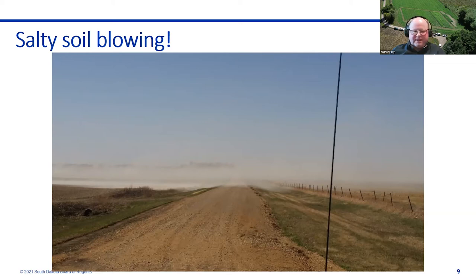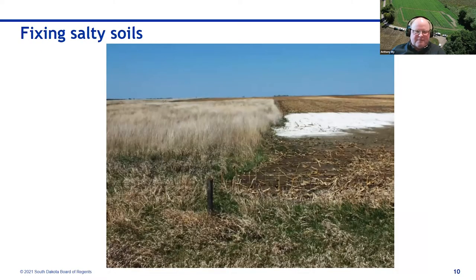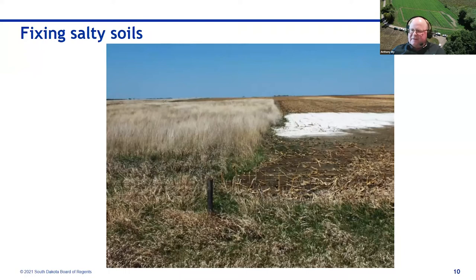We even have evidence of salty areas blowing in the wind — the soil surface becomes dispersed with no structure to hold particles together, and the wind easily picks up salt, sand, silt, and clay particles. Fixing a salty soil involves planting perennial grasses tolerant to salt, which eventually help move that salt back down in the soil profile, after which less tolerant species of grass can fill in and take over.